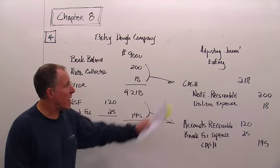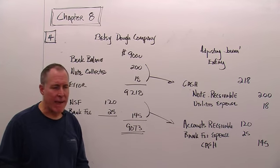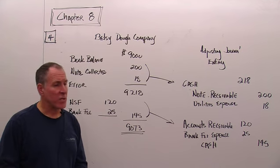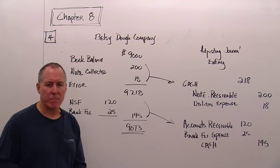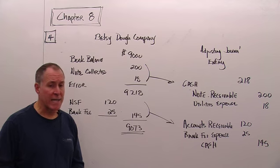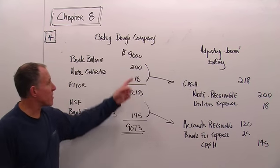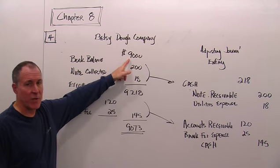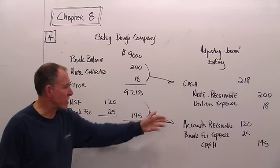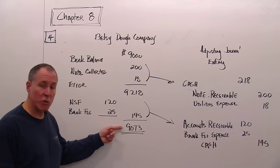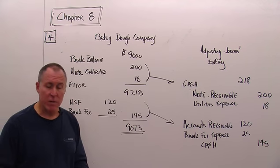Now, you'll notice right here, I've indicated these are adjusting journal entries. When are adjusting journal entries done? At the end of the month. Why are they done? To get your accounts to their proper balance. When are adjusting journal entries made in the accounting cycle? Just before you prepare financial statements. Why is that? It's because we want our financial statements to have their correct balance on them. The correct balance for cash is not $9,000. The correct balance for cash is $9,073. We need to make these entries to get the account to its proper balance. This is what will show up on the balance sheet for this cash account. All right. That happens to be chapter number eight.